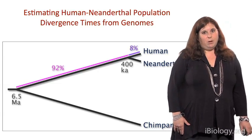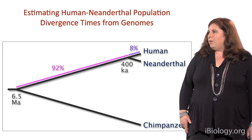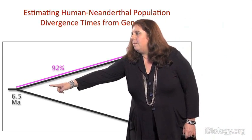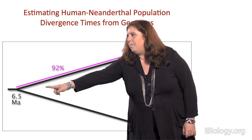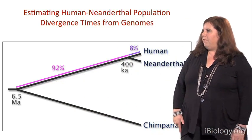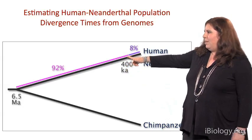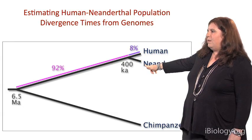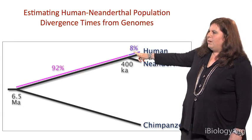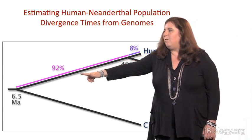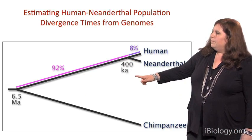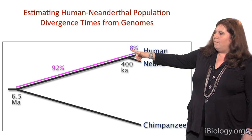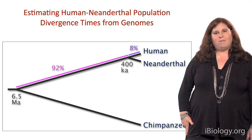When the Neanderthal genome was compared to the human genome, you can look at how much divergence has occurred since modern humans differentiated from chimpanzees within the past 6.5 million years, and specifically the divergence in the human lineage since they diverged from Neanderthal. Humans have only accumulated about 8% of this total divergence, giving an estimate of population divergence between humans and Neanderthals of about 400,000 years ago.